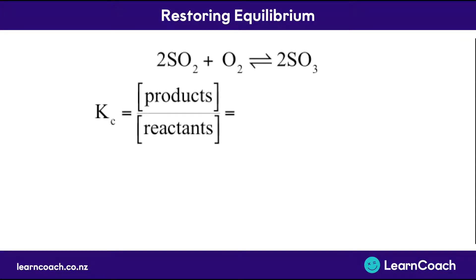Welcome to this video on restoring equilibrium. In the last video we saw the equation where sulfur dioxide and oxygen went to sulfur trioxide, and we learned that could be expressed as an equilibrium constant Kc, showing the ratio of how much product was produced compared to how much reactant once it reached a state of dynamic equilibrium.